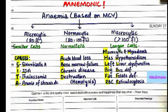Now we come to the mnemonic for the causes of these anemias. First, microcytic anemia — the causes can be remembered by the word SITA: S for sideroblastic anemia, I for iron deficiency anemia, T for thalassemia, A for anemia of chronic disease. Then the causes of normocytic anemia are as easy as ABCD: A for acute blood loss, B for bone marrow failure, C for chronic disease, D for destruction or hemolysis.